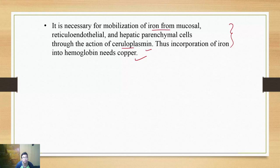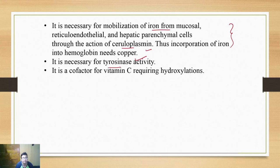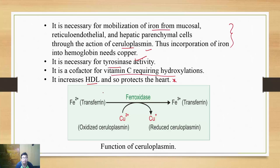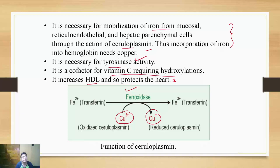Recall the enzymes: copper is necessary for tyrosinase activity and hence melanin synthesis. Lysyl oxidase makes copper a cofactor in the vitamin C-requiring hydroxylation reaction in collagen synthesis. Copper also increases HDL, protecting the heart — in copper deficiency, heart disorder occurs. The key action to remember is ceruloplasmin: it acts as a ferroxidase, where Cu²⁺ gets reduced to Cu⁺ and in the process converts Fe²⁺ to Fe³⁺.